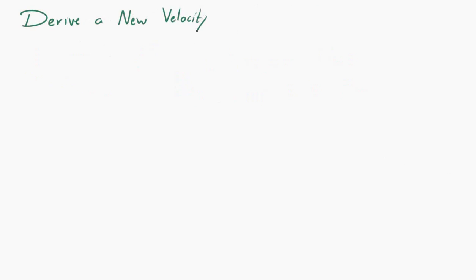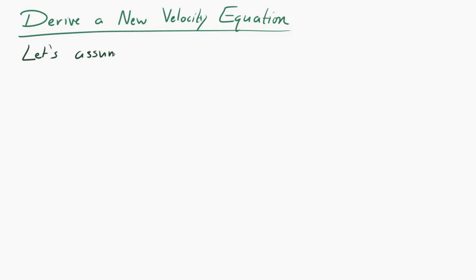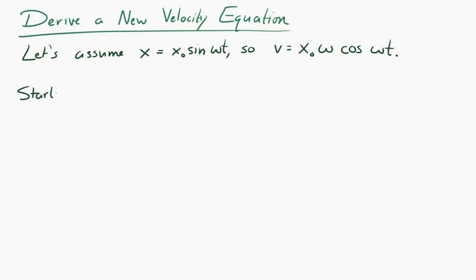Now we're going to derive a new equation for the velocity in simple harmonic motion. Assume that displacement equals the amplitude times sine of omega t, so the velocity equals the amplitude times the angular frequency times cosine of omega t. Starting from the trig identity: sine squared plus cosine squared equals 1.